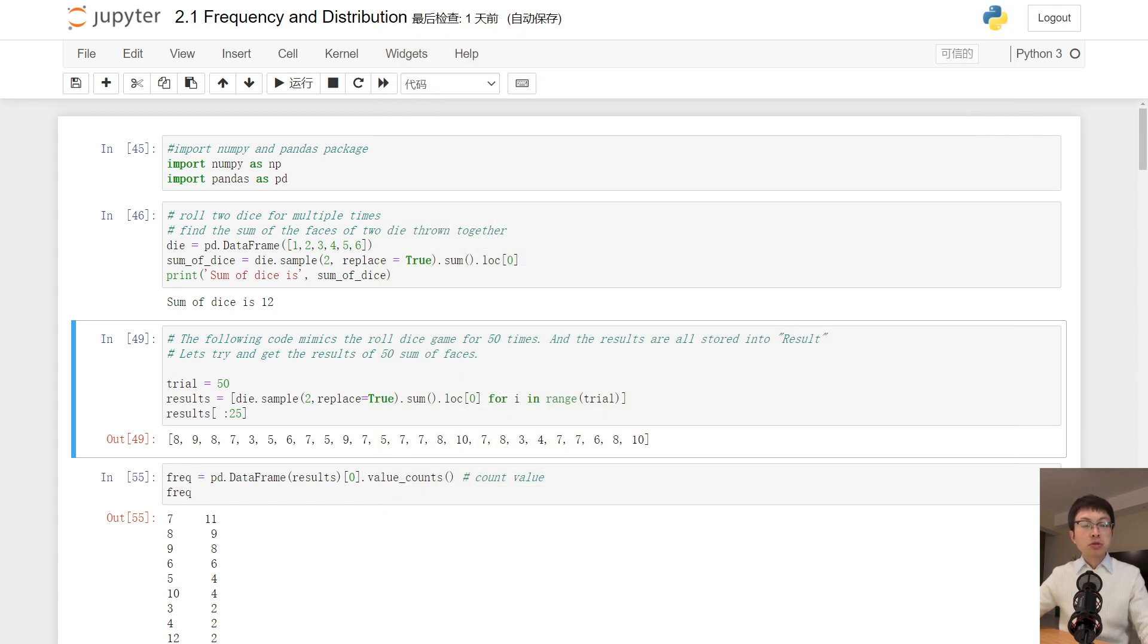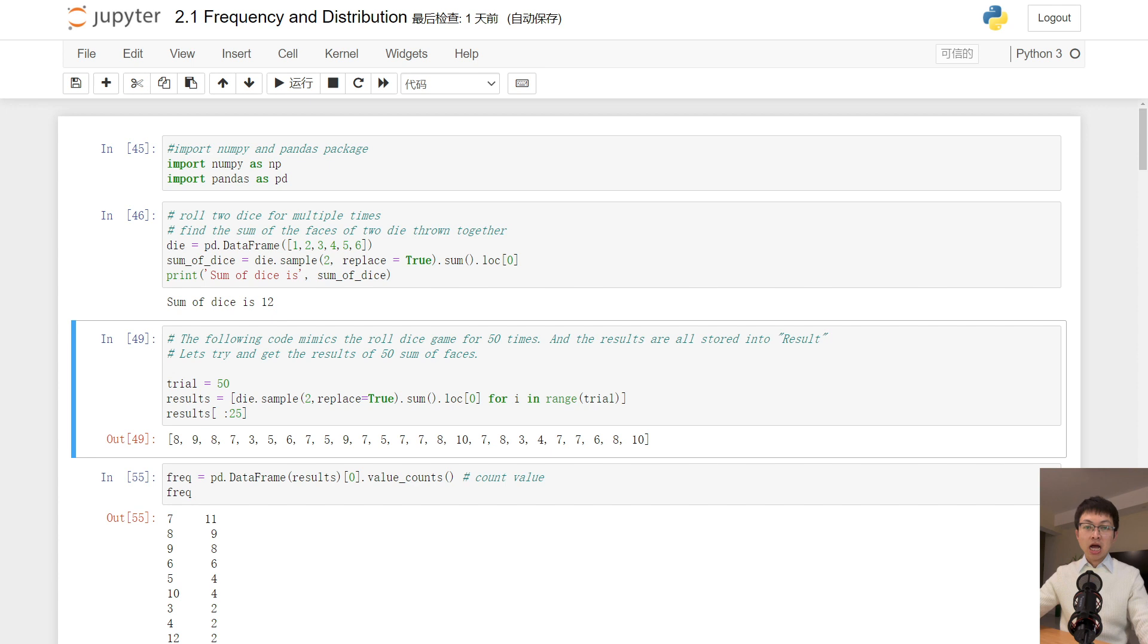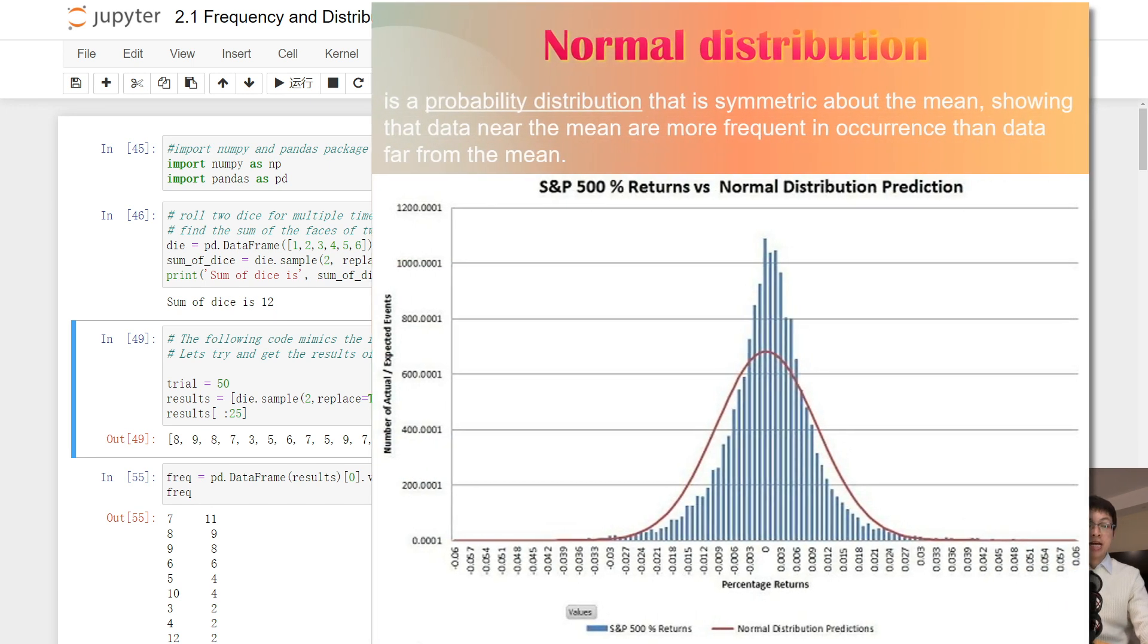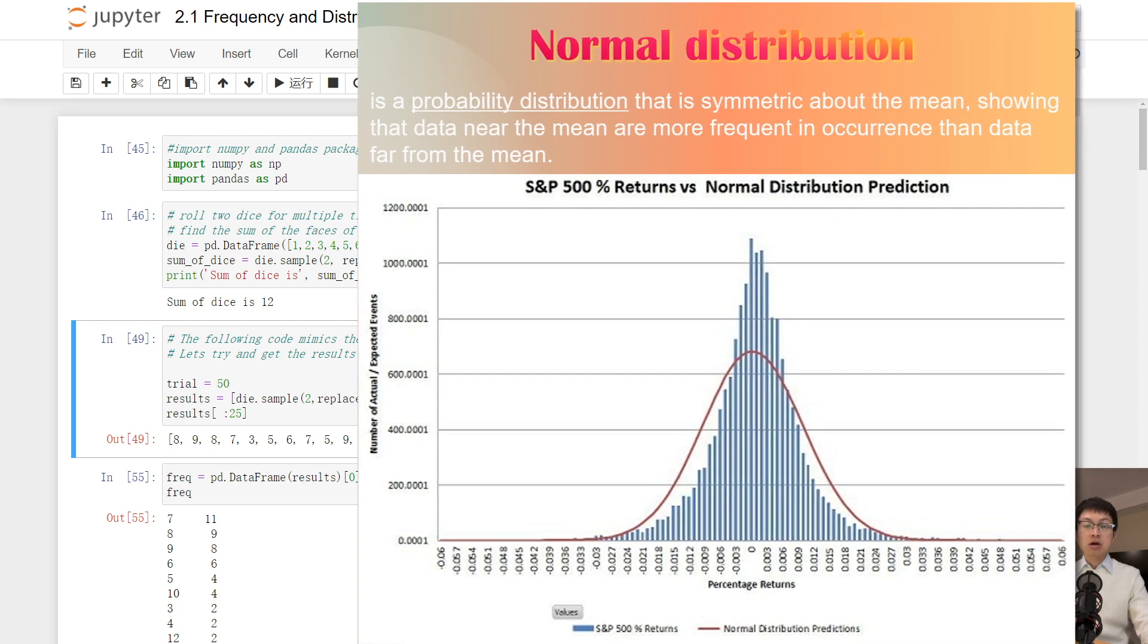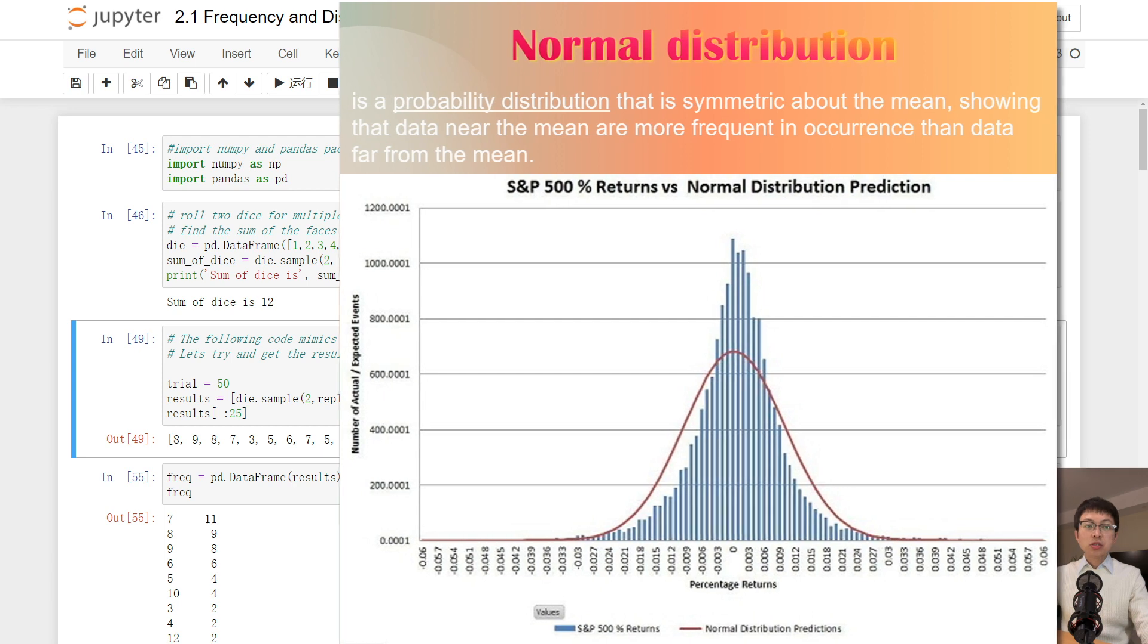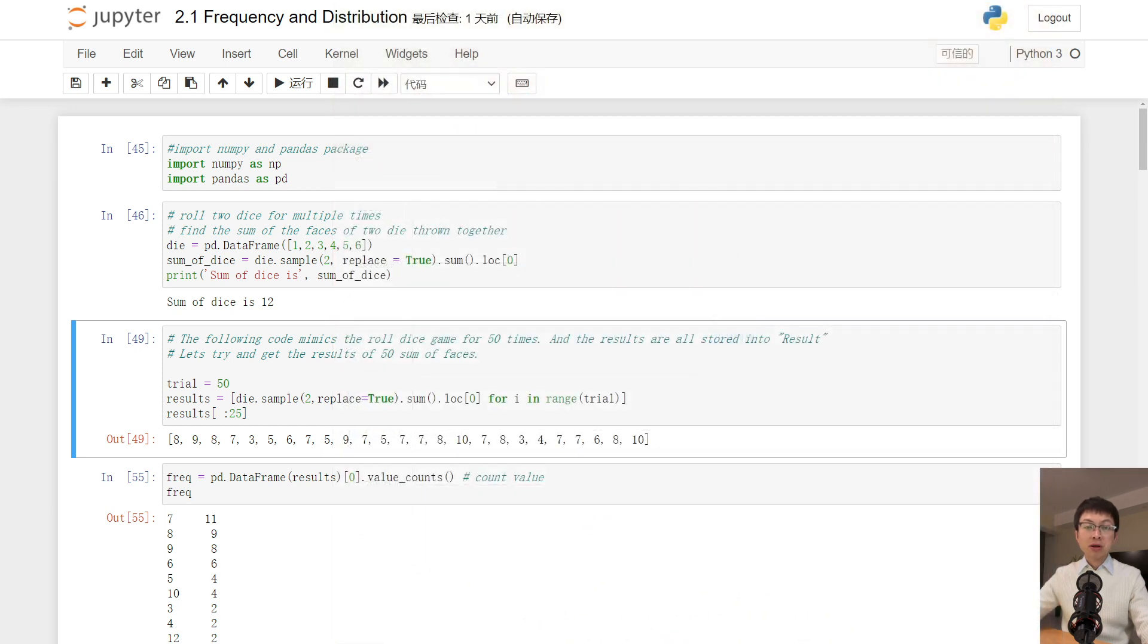The normal distribution is the most common type of distribution assumed in technical stock market analysis and in other types of statistical analysis.